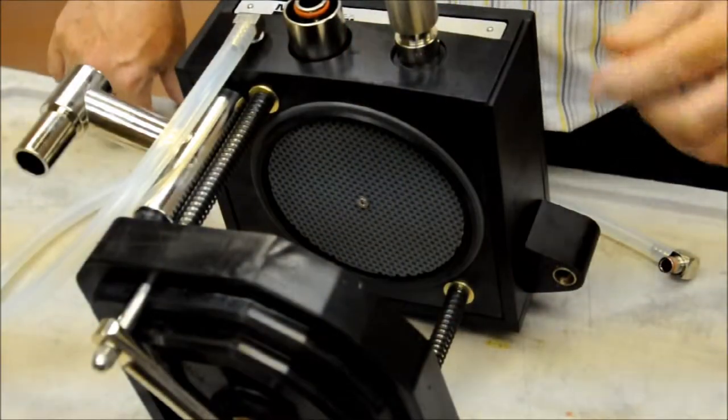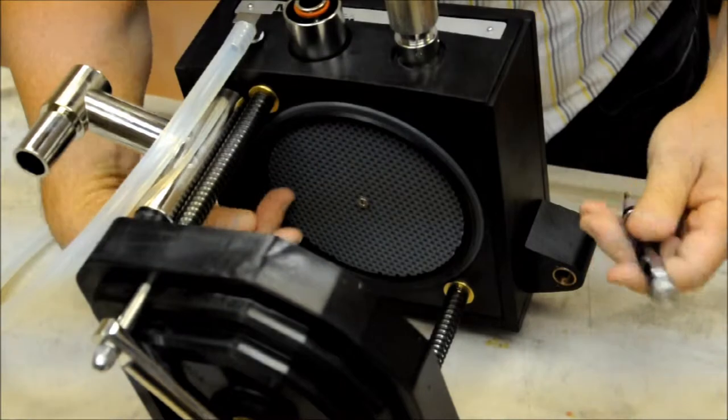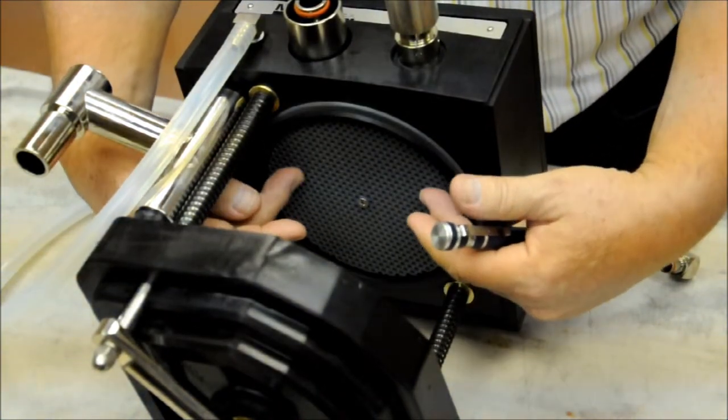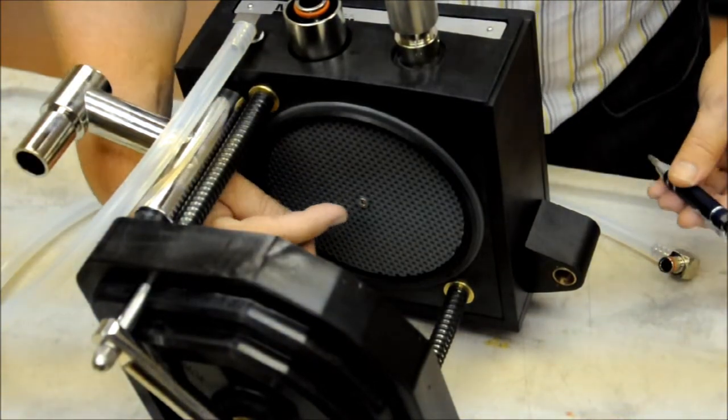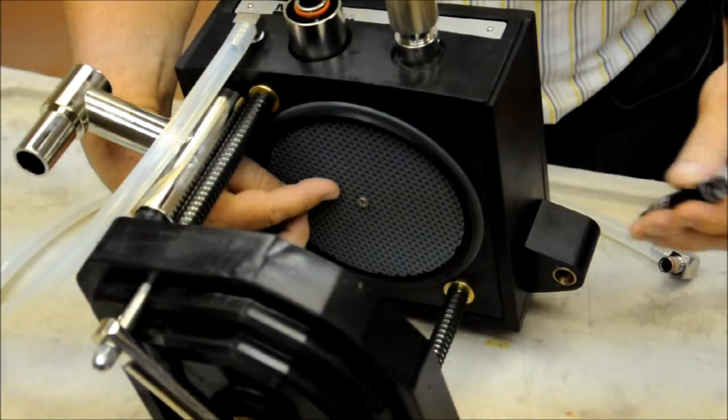When you remove the soda lime canister you will notice here we have a perforated grill. In the center of the perforated grill there is a Phillips head screw. We need to remove this screw and remove the grill.